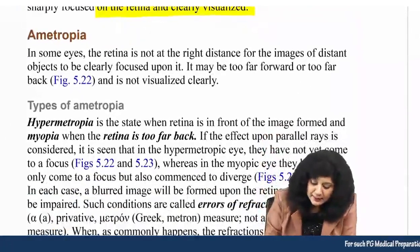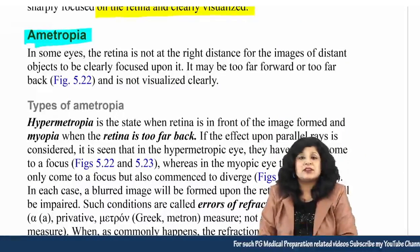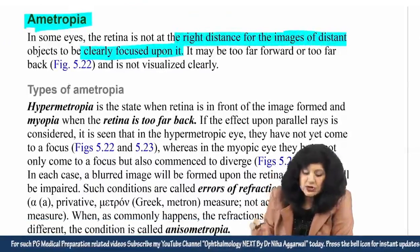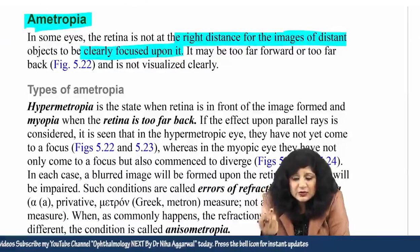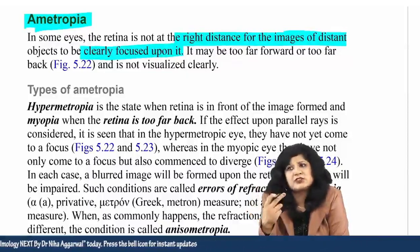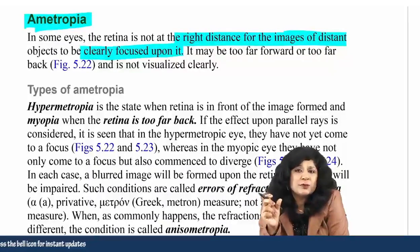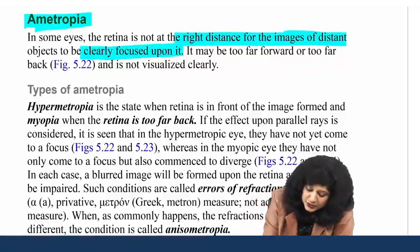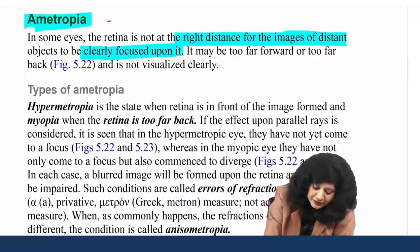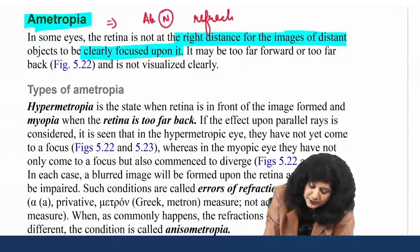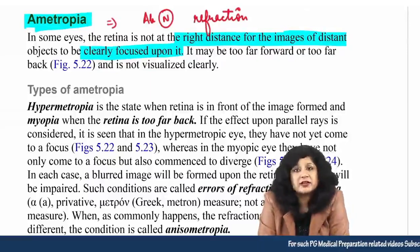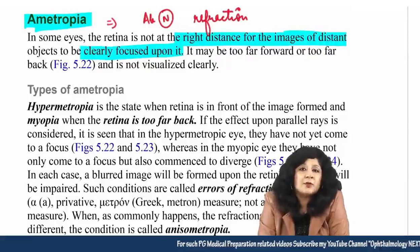Ametropia means the retina is not at the right distance for images to be clearly focused — the size of the eyeball is not exactly right so that the image is not exactly at the retina, either in front or behind. Ametropia means abnormal refraction, with accommodation at rest not focusing exactly on the retina — it includes both hypermetropia and myopia.